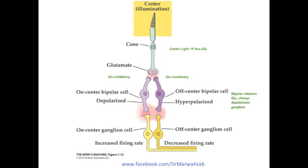The effect of the glutamate on the next layer of cells — the bipolar cell — will depend on whether the next bipolar cell is an on-center or an off-center bipolar cell. If it is an on-center bipolar cell, then glutamate will inhibit its activation, making it less likely to fire an action potential. If the next cell is an off-center bipolar cell, then the glutamate will have an excitatory effect on it, making the off-center bipolar cell more likely to fire action potentials.